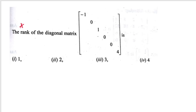What is the rank of the diagonal matrix? All off-diagonal elements are 0. Counting the non-zero rows: there are 3 non-zero diagonal entries. The rank of this diagonal matrix is 3. The correct option is 3.